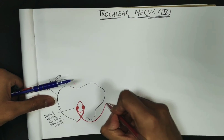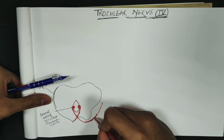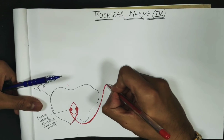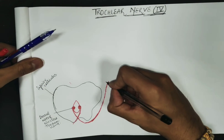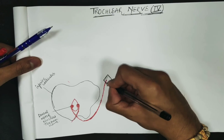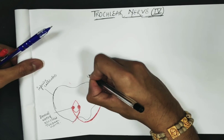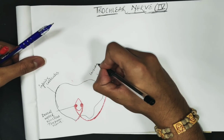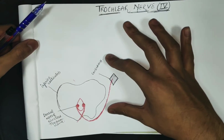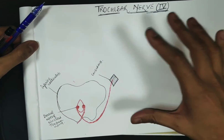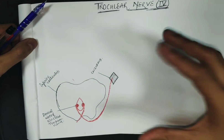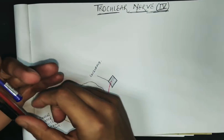The nerve contains only motor fibers and travels through the cavernous sinus, specifically along its lateral wall. Many other nerves also pass through the cavernous sinus: the oculomotor nerve, the ophthalmic and maxillary branches of the trigeminal nerve, the abducens nerve, and the internal carotid artery.